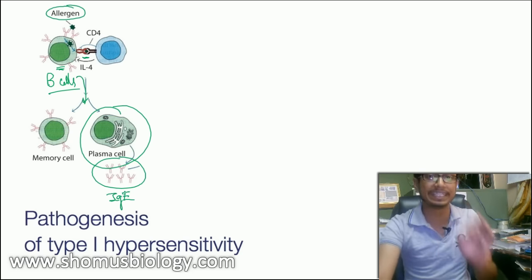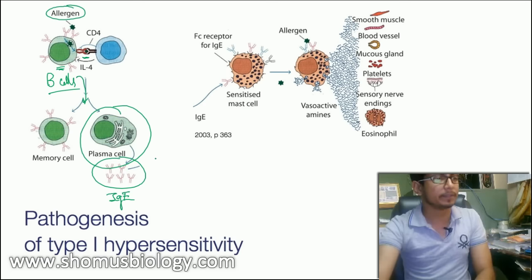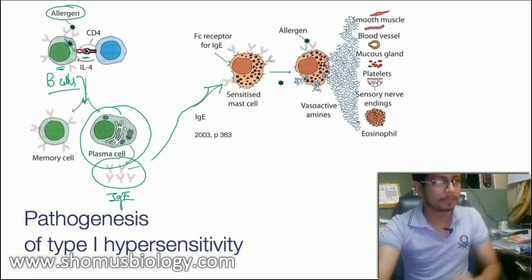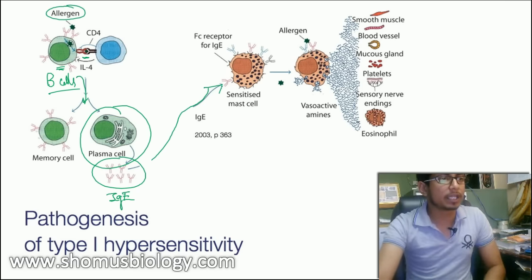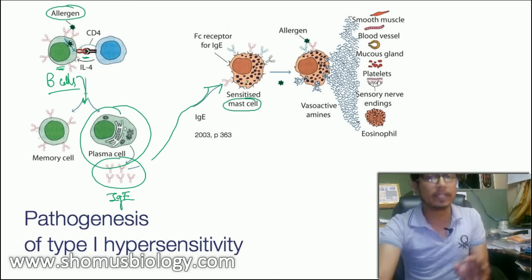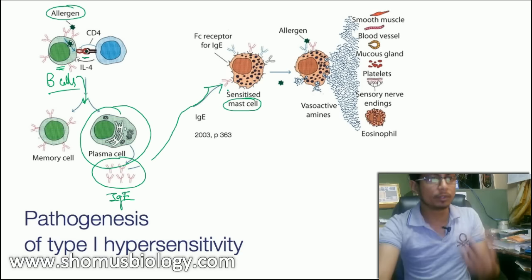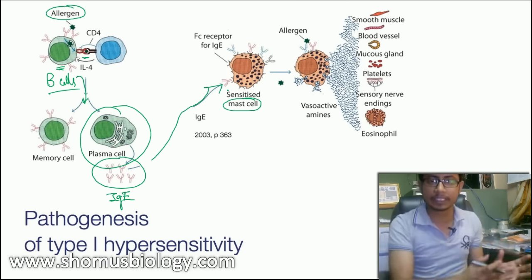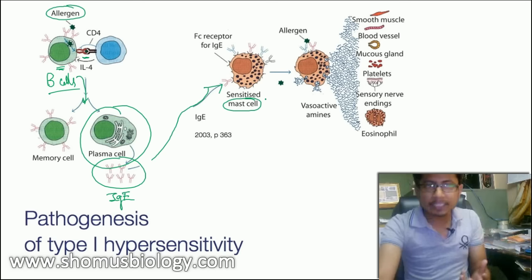The plasma cells produce large amounts of IgE (immunoglobulin E) antibodies, which initiate the hypersensitivity process. These IgE molecules travel and interact with the surface of mast cells. Mast cells are granule-rich cells containing chemical components like histamine, bradykinin, and leukotriene B4 and C4 — chemical mediators that cause anaphylaxis acting on smooth muscle, blood vessels, mucosal glands, and platelets.